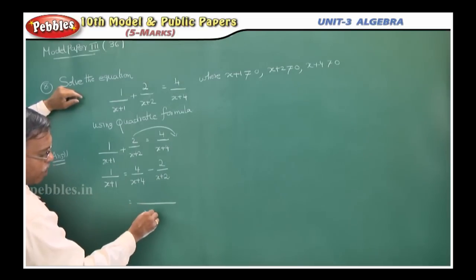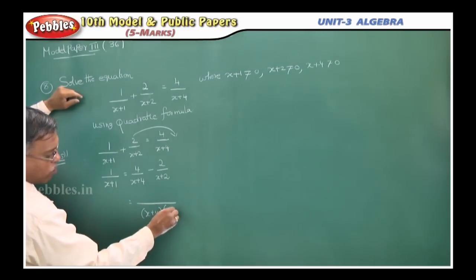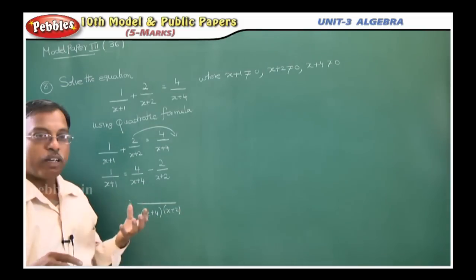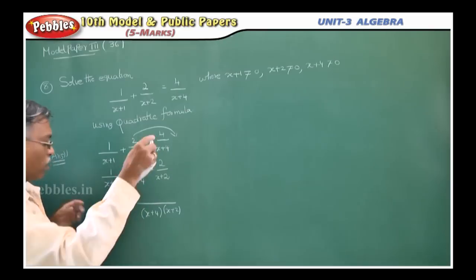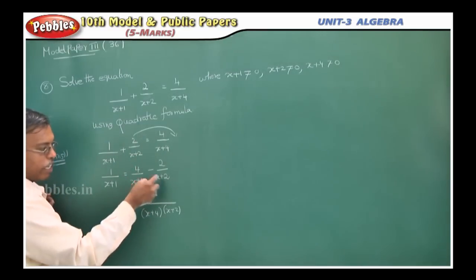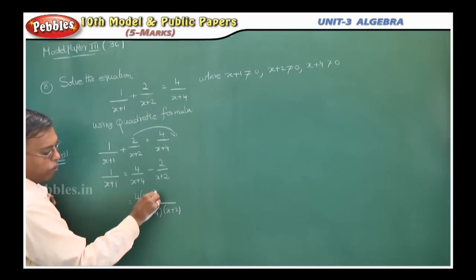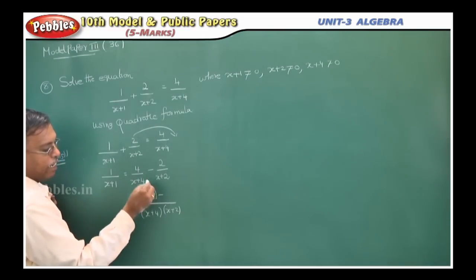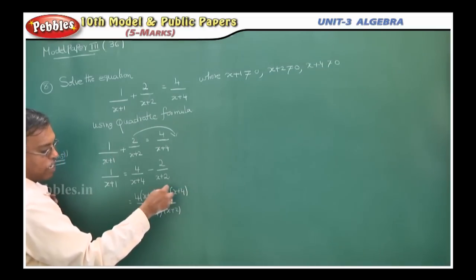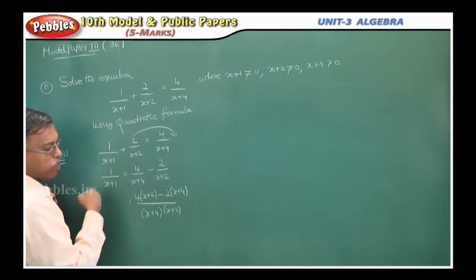Now take the LCM of (x+4) and (x+2) on the right side. If two numbers are different, you multiply them to get the LCM. Since x+4 is already there, x+2 will come in. So the right side becomes: 4(x+2) − 2(x+4), all divided by (x+4)(x+2).